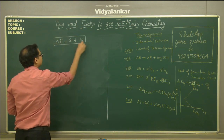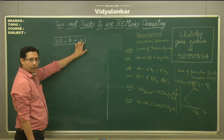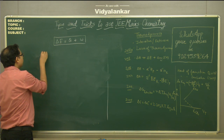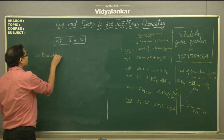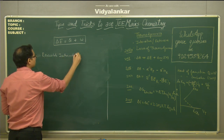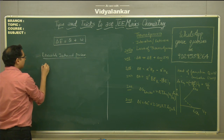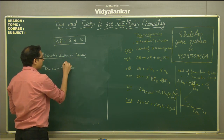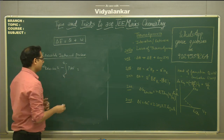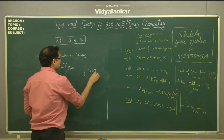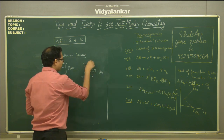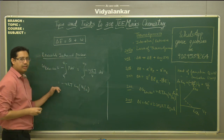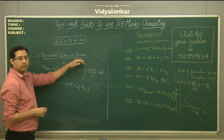The first law of thermodynamics states: ΔU = Q + W. Questions can also ask you to find work done in reversible and irreversible processes. For a reversible isothermal process, work done W equals minus nRT ln(V2/V1), integrating from V1 to V2.